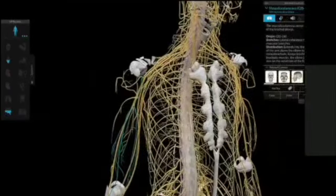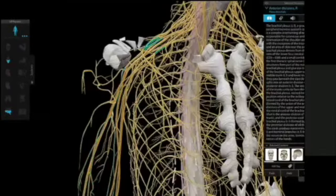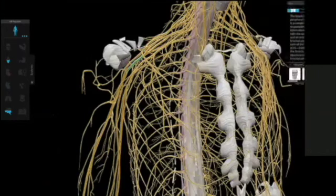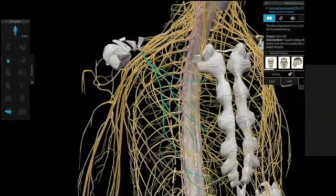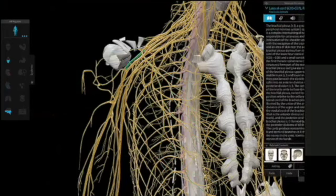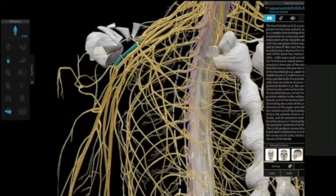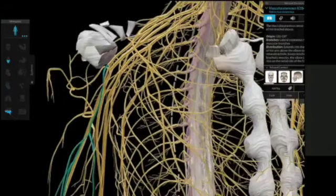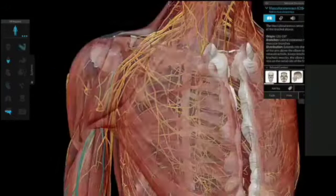All right, so your upper trunk shoots down. You got an exit off the highway going to your pecs. That's that one. Then you follow it even further. We're not going to go too crazy with the exits here, but they're going to come down and that's your musculocutaneous, which is all your bicep hips.